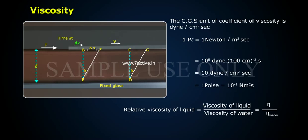Relative viscosity of a liquid equals the viscosity of the liquid divided by the viscosity of water, which equals eta divided by eta-water.